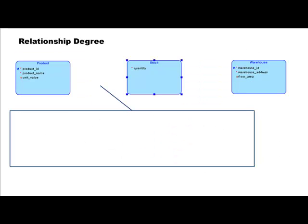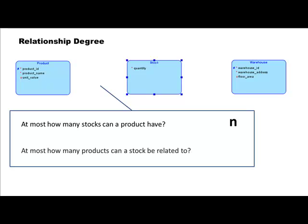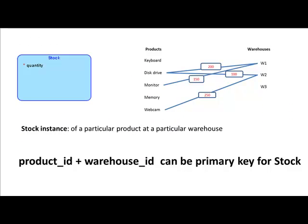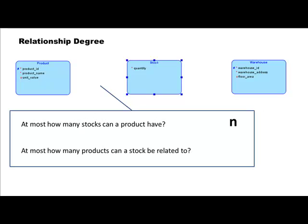Each line connects one product to one warehouse, and therefore every line is connected to only one product. Therefore, each stock is related to just one product, and therefore this is a one-to-many relationship.